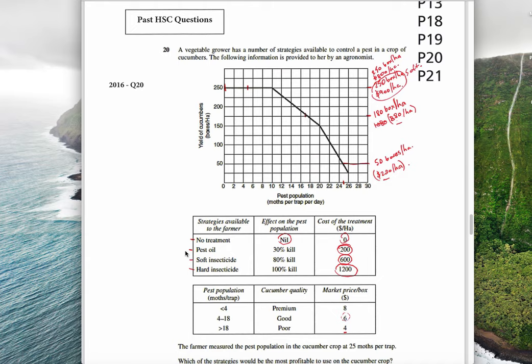We have the yield of the cucumbers and the pest population. As the pest population goes up, the moths per trap that they've collected, more and more moths means less and less yields, which drops off as you get more moths. Here it's got the different treatments and what it does to the pest - nothing, 30% killed, 80, 100, etc., and then the cost of putting that on. And lastly, we have the price we're actually going to get depending on the pest population. If there's more moths, it's going to have poor quality produce and a lower price, $4 per box. If we have less, then we're going to get $8 per box. They're going to be premium instead of poor.